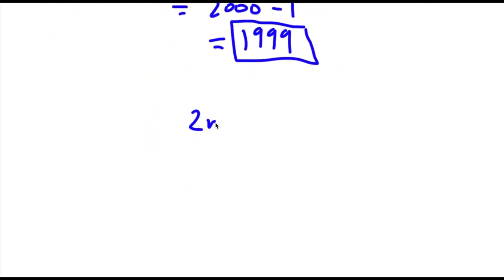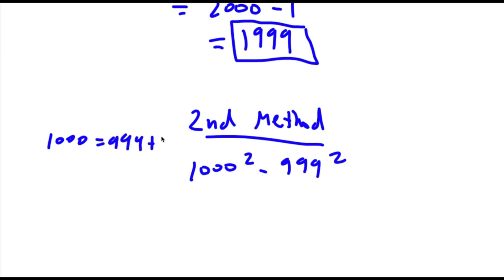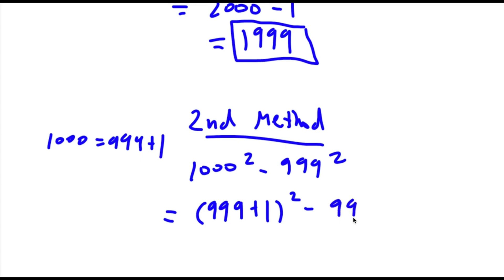Now, my second method to solving this problem. We again start with 1000 squared minus 999 squared. Last time I replaced 999 with 1000 minus 1. This time I'm going to replace 1000 with 999 plus 1. So now I have (999 plus 1) squared minus 999 squared.